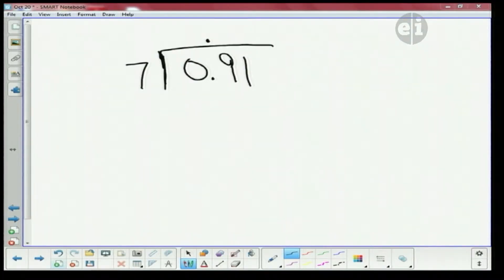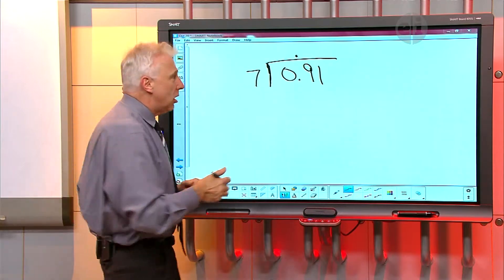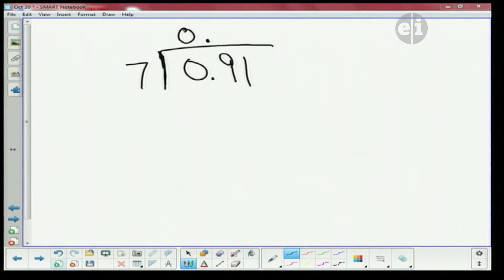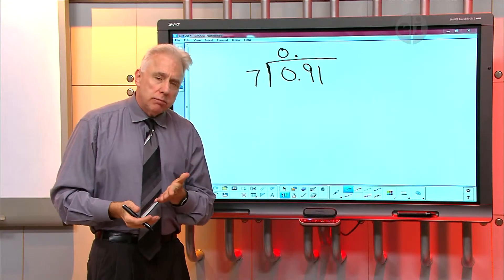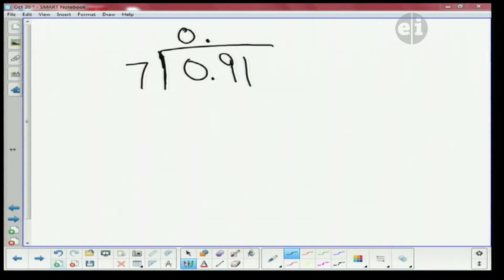Hey, Thomas, will seven go into zero? No. Oh, so I'm going to put a zero up here in my quotient. Now we can say, will seven go into nine? How many times will seven go into nine, Thomas? One time. One time. That's right. I was jumping to the answer, wasn't I? One times seven is seven.